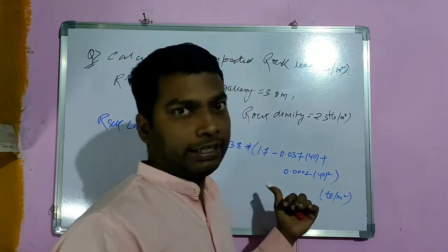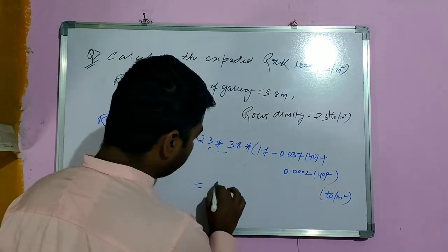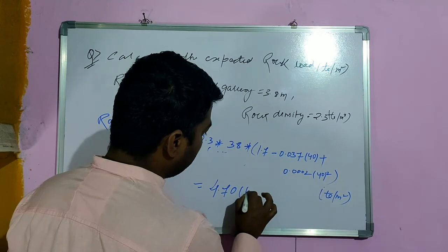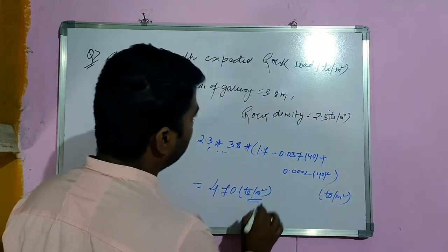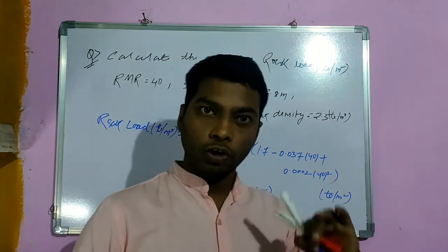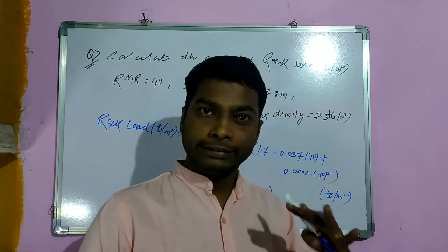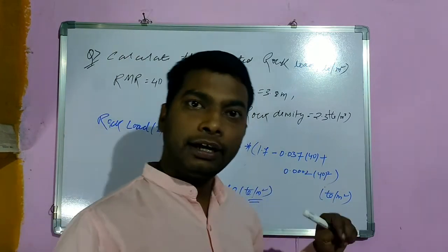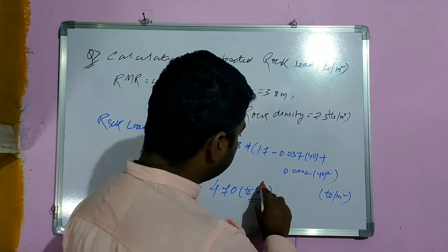The calculated answer is approximately 4.7 tonnes per meter square. This is the rock on load. You can solve this using the formula, and this is the answer.